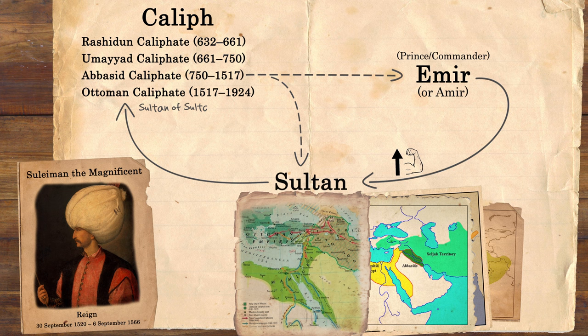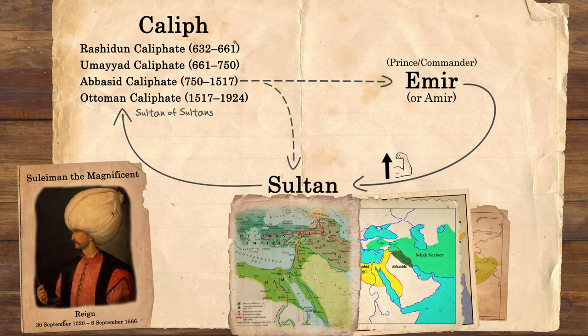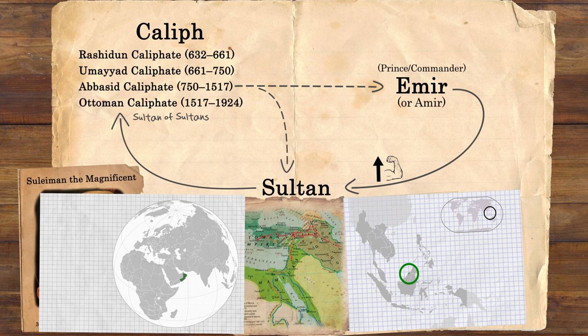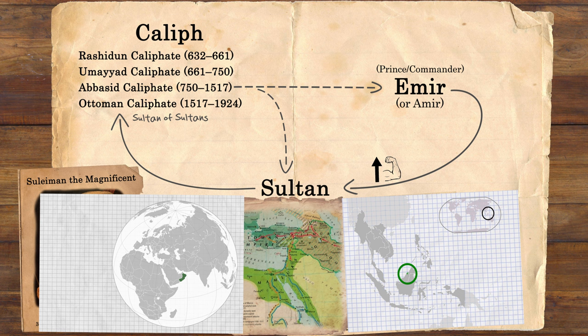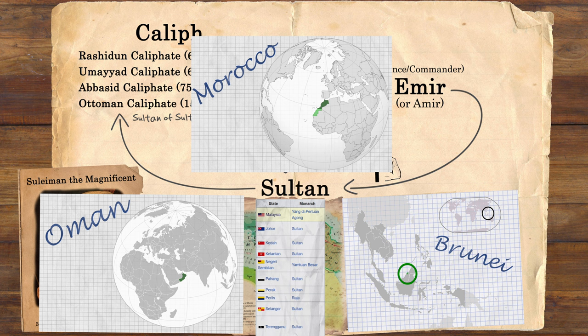Modern day Sultanates are relatively small and wouldn't really be classed on the rank of Empire. Speaking of modern day Sultanates, there are two sovereign Sultanates left — that being Oman and Brunei — as well as a number of Sultanates within Malaysia. Morocco used to be a Sultanate as well until 1957, when they changed their ruler's rank to Malik.